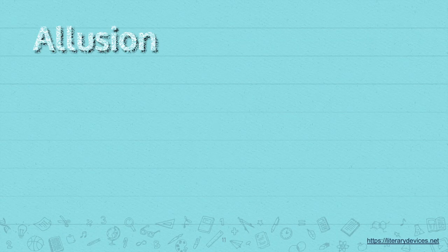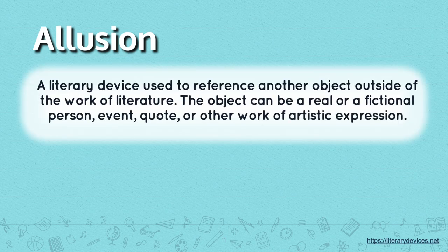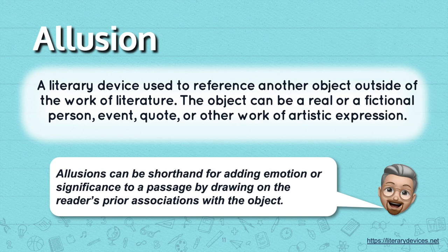Now let's take a look at allusion. It is a literary device used to reference another object outside the work of literature. The object can be a real or a fictional person, event, quote, or other work of artistic expression. Allusions can be shorthand for adding emotion or significance to a passage by drawing on the reader's prior associations with the object.